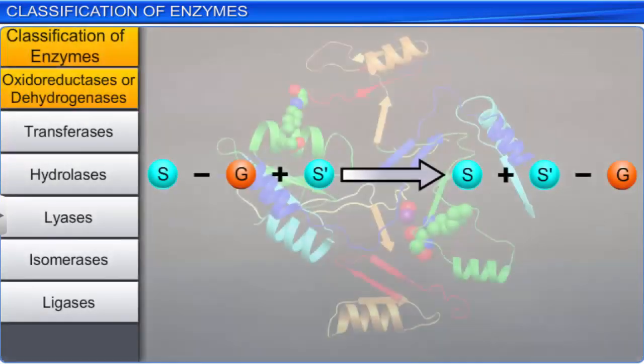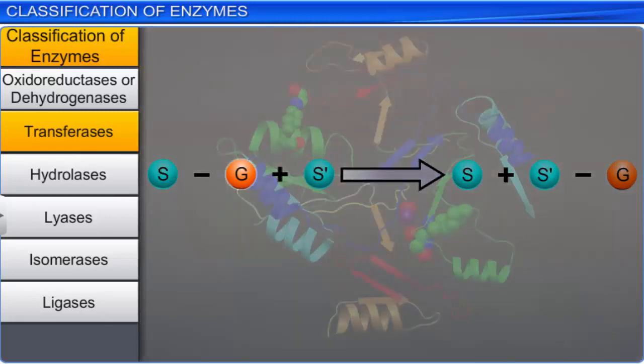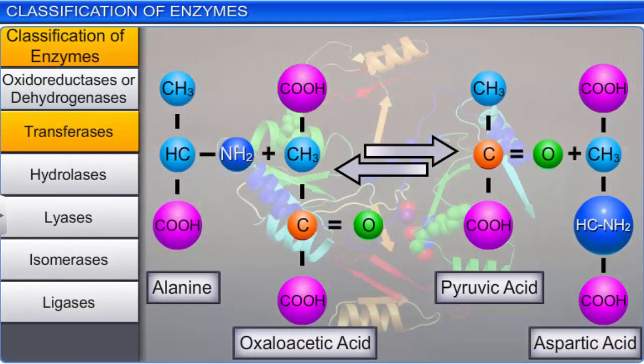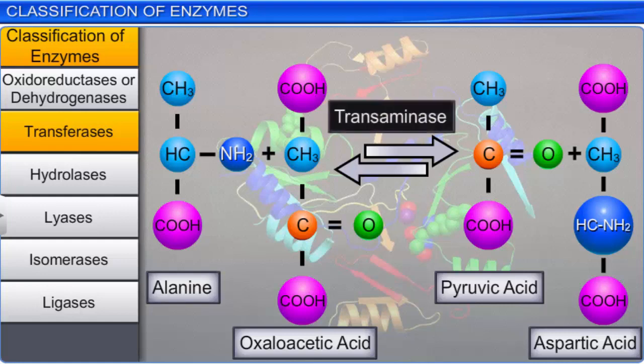The second class of enzymes is transferases. These enzymes catalyze the transfer of a functional group G, other than hydrogen, between the two substrates S and S prime. For example, the enzyme transaminase transfers the amino group from alanine to oxaloacetic acid, forming pyruvic acid and aspartic acid.